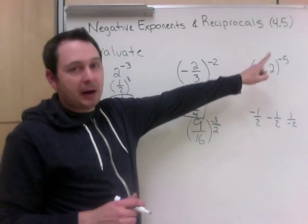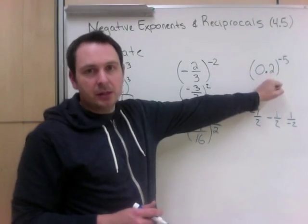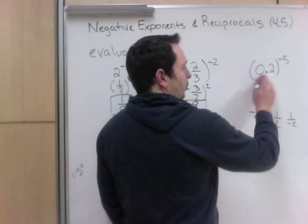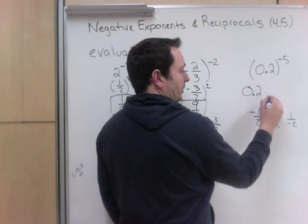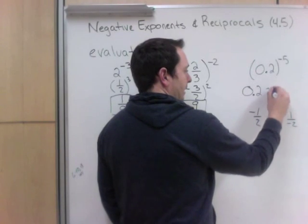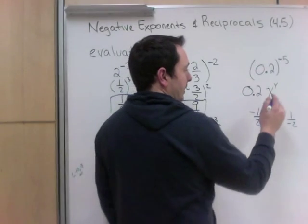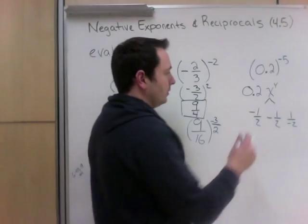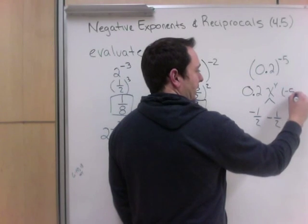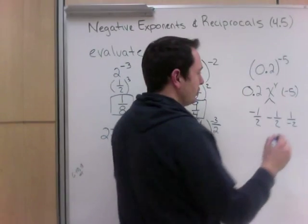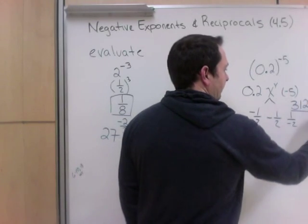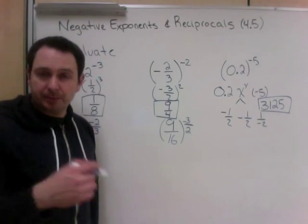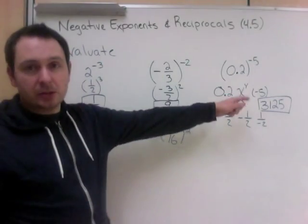Next one, 0.2 to the power of negative 5. When it's dealing with decimals, just go ahead, punch it in your calculator. 0.2 to the power of negative 5. On my calculator, I'd go 0.2. My power button looks like that. Some of your power buttons may also just be a hat. So one or the other. And then make sure you put negative 5. And your answer should be 3,125. Go ahead, try your calculator. If you're not getting that, then you're doing something wrong. Try something else or come see me for help.